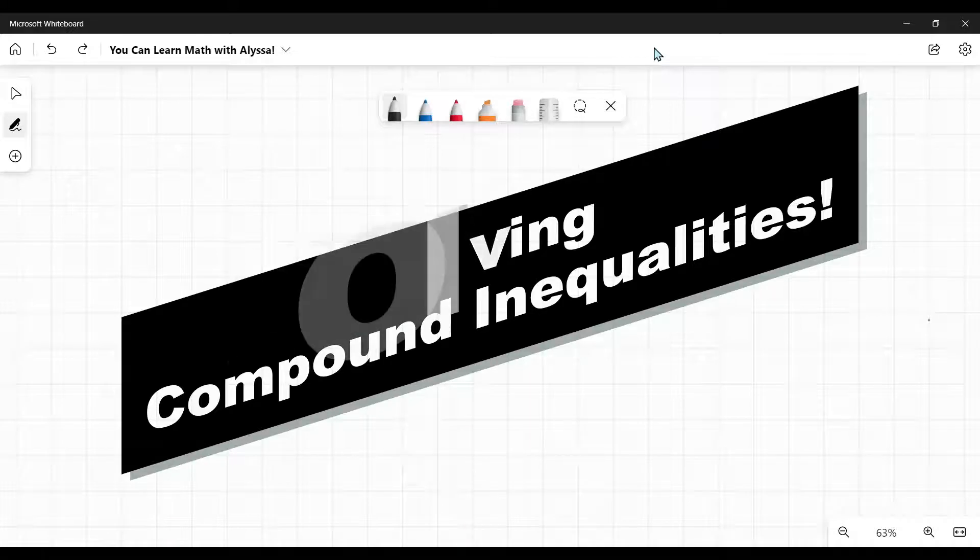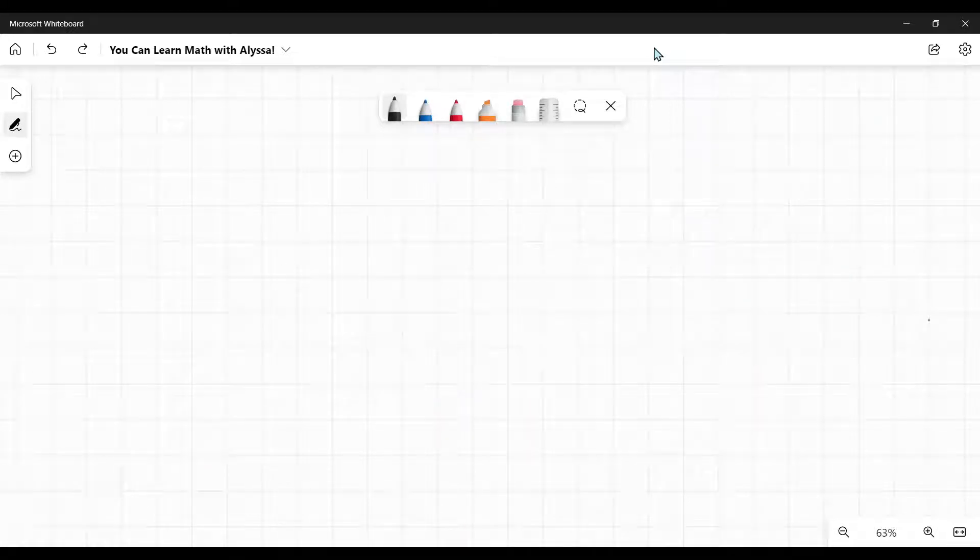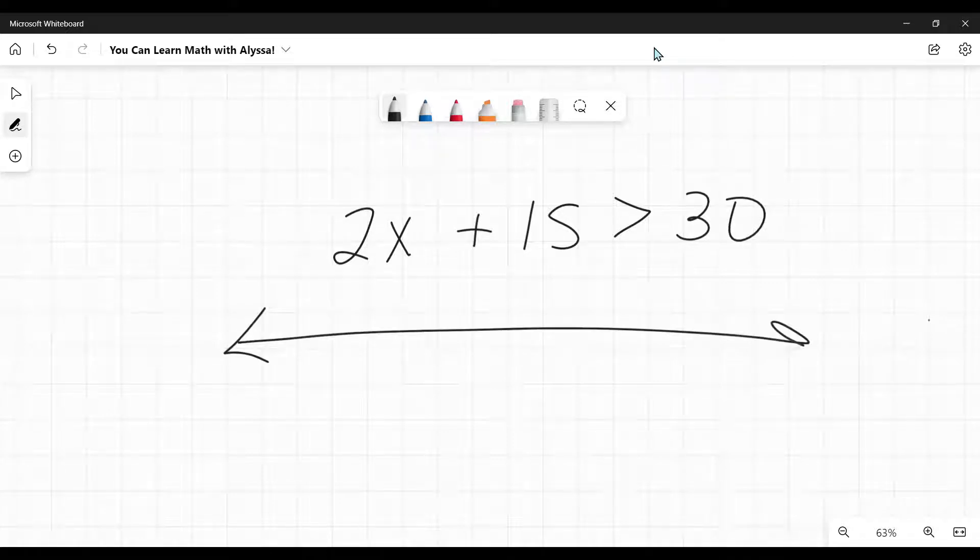If you're looking for a straightforward inequality on a number line, where they give you something like 2x plus 15 is greater than 30 and they're wanting you to graph this on a number line, that is a separate video, link is in the description below. This is the next step up.